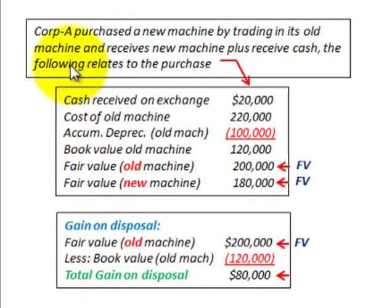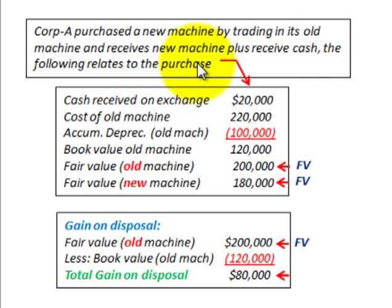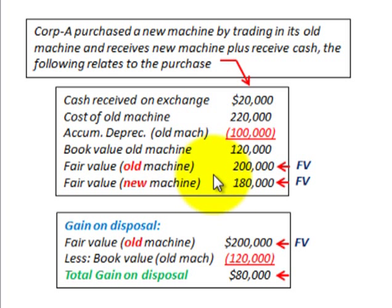Corporation A purchased a new machine by trading in its old machine, and they're going to receive the new machine plus some cash on that exchange. The cash received on the exchange is $20,000. We have the cost of the old machine, less the accumulated depreciation on the old machine, which gives us the book value of the old machine at $120,000.